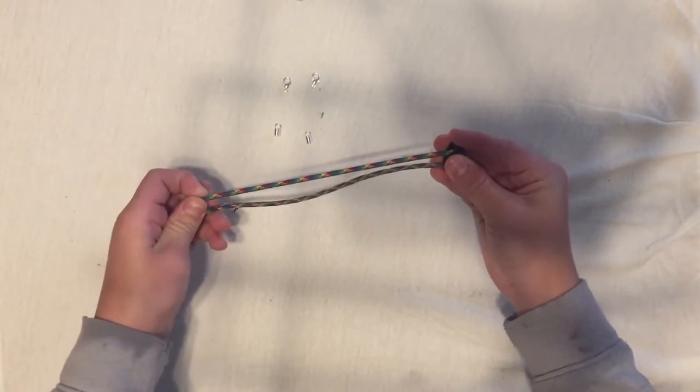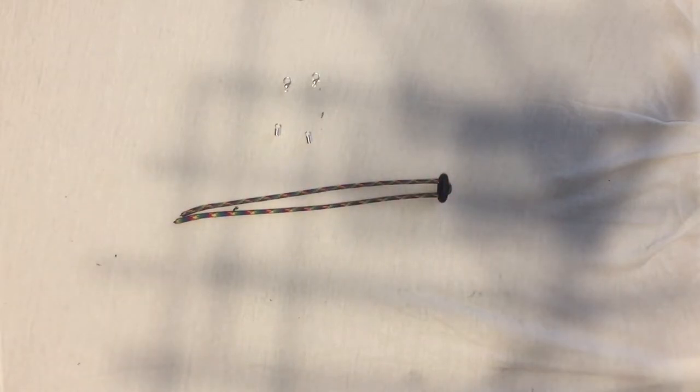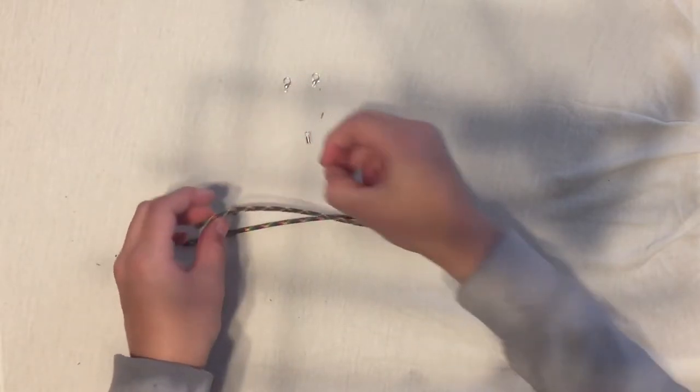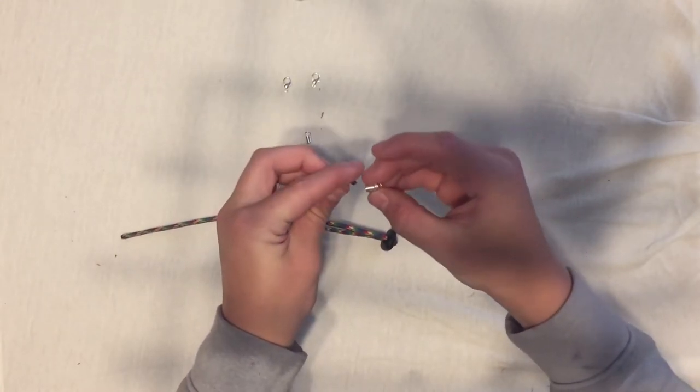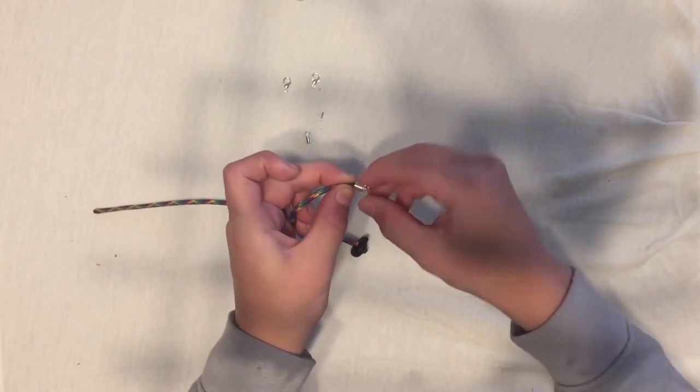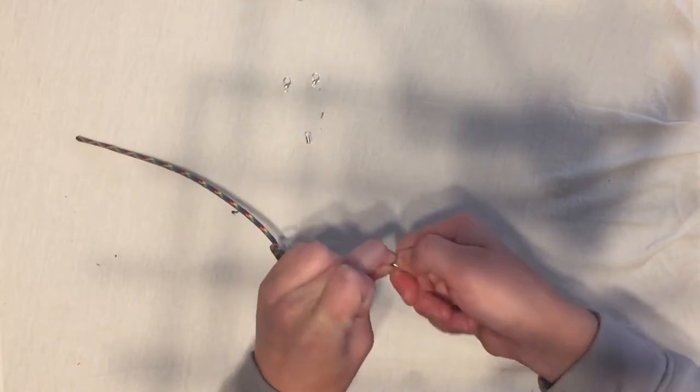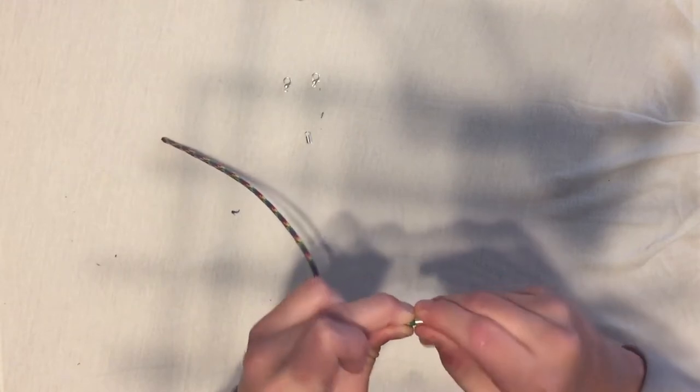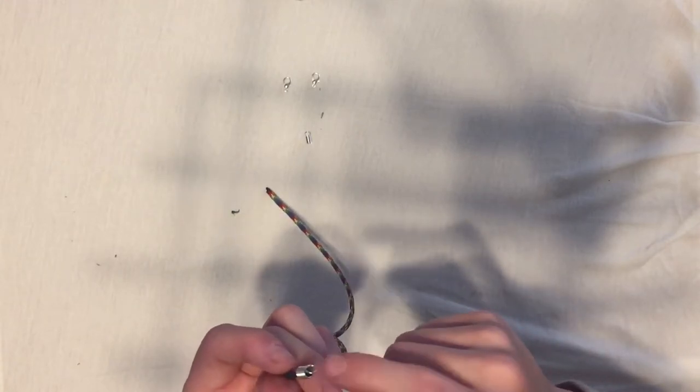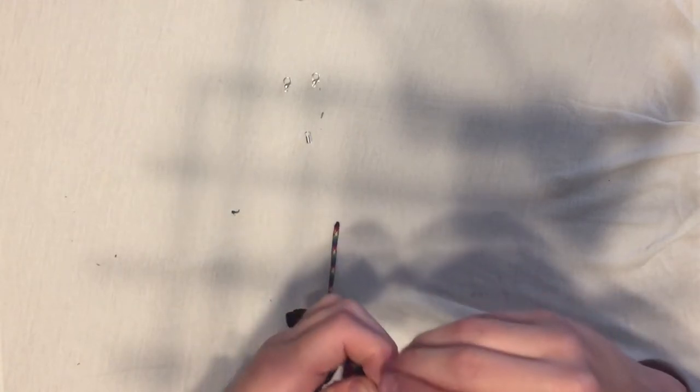Second step: you're going to take your springs and you're going to twist them on there. Now for me personally, I like to finish off one side first.